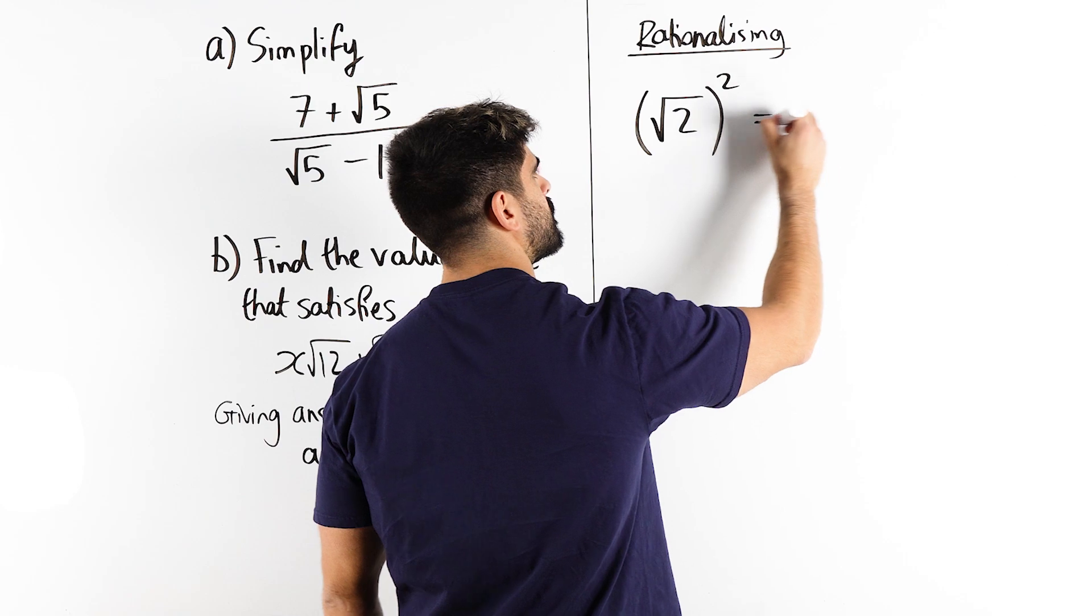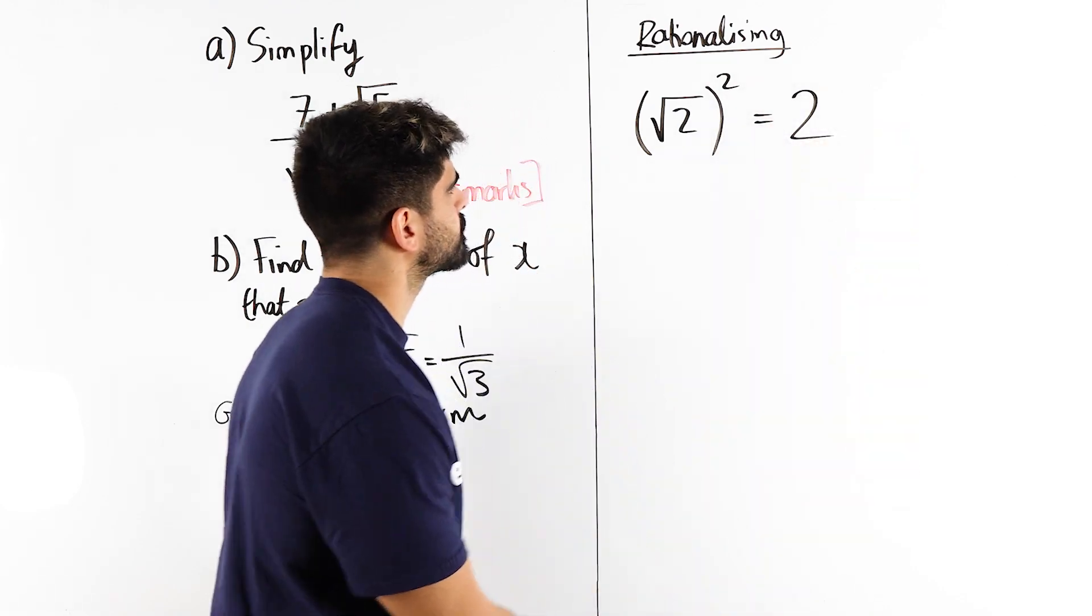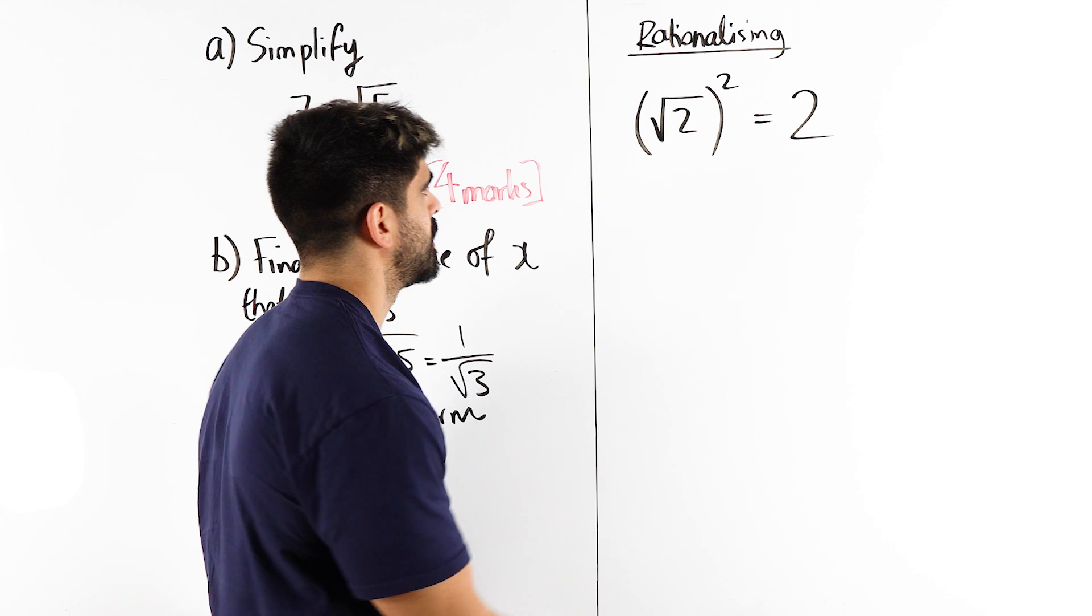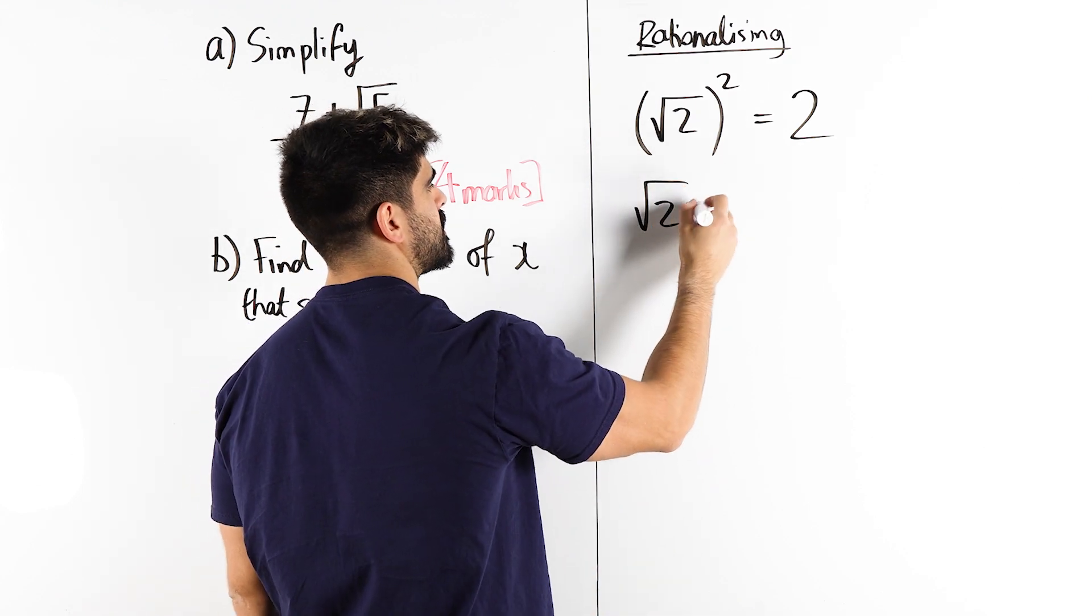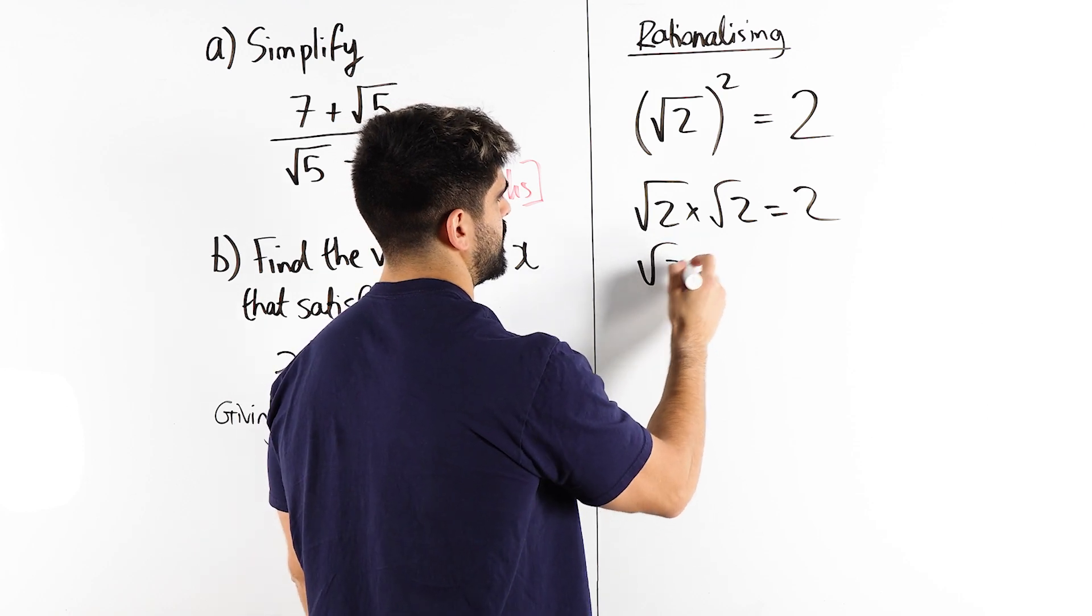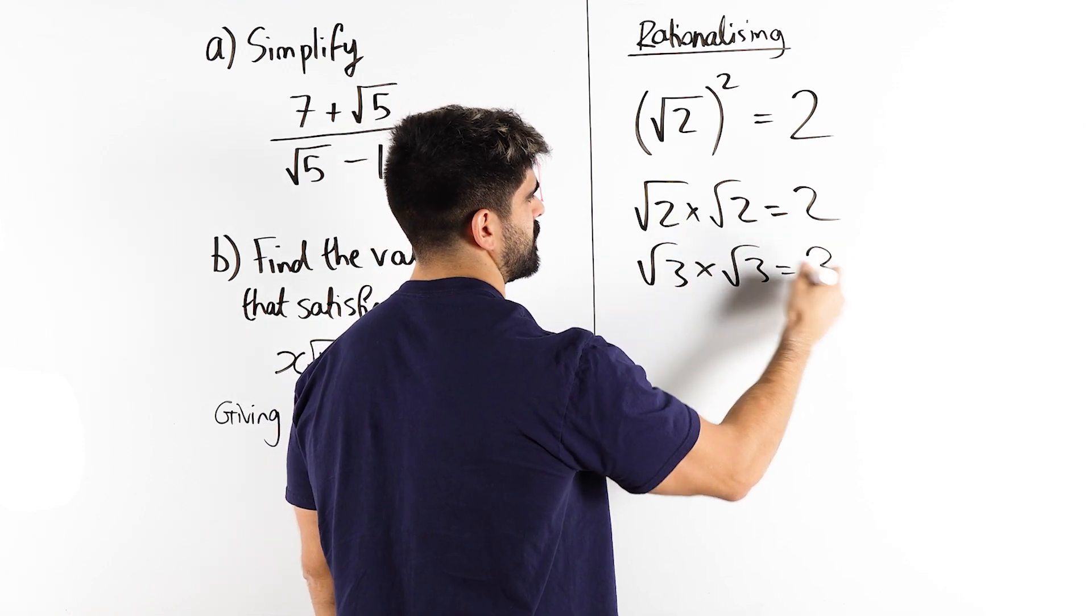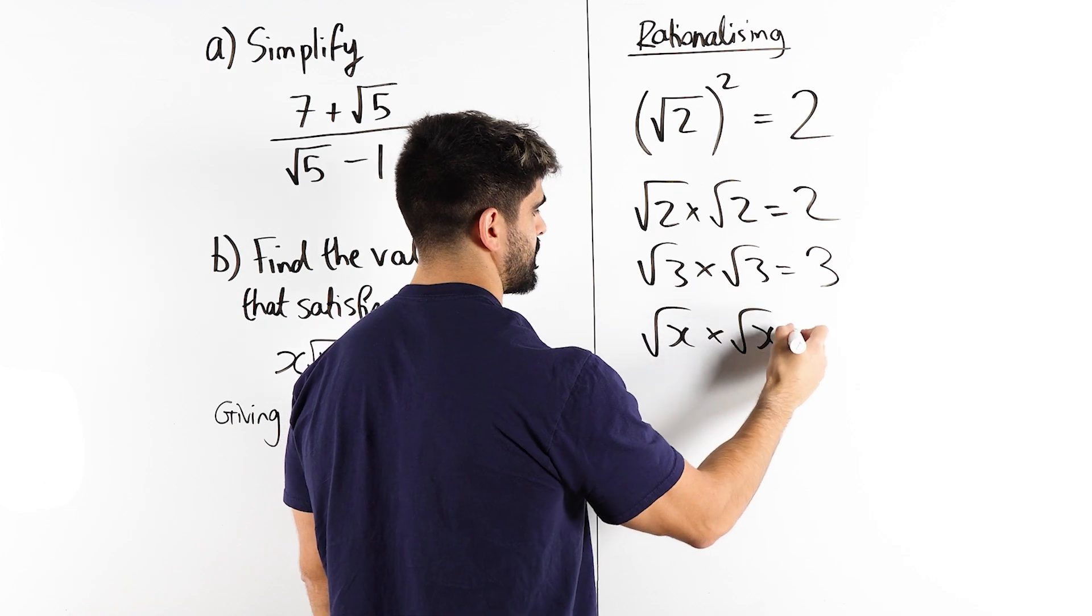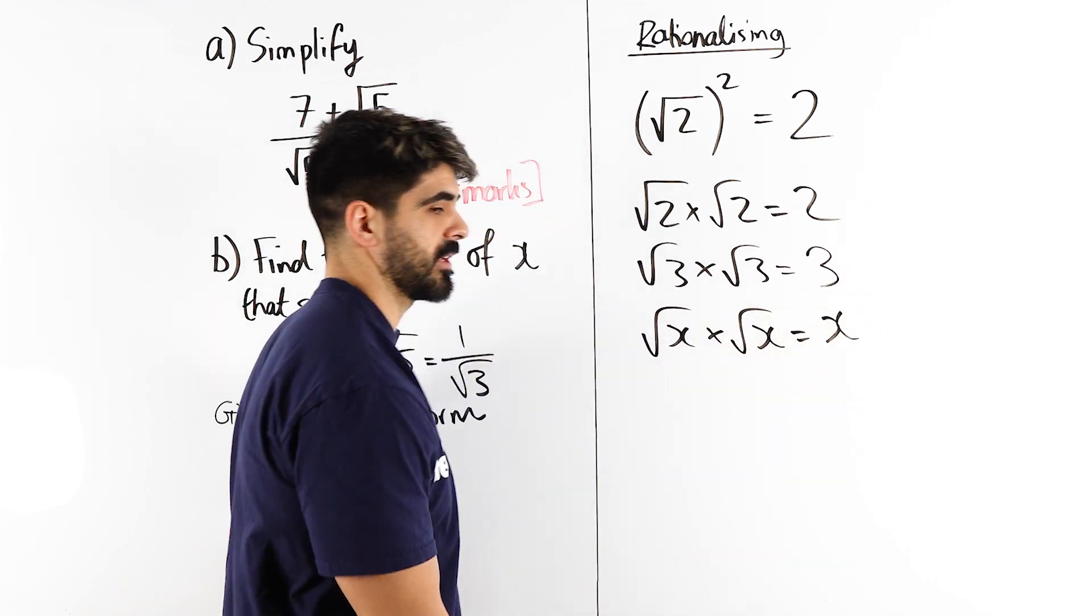Squaring just means multiply the number by itself. So root 2 times root 2 is 2. Nice. Root 3 times root 3 is 3. Root x times root x is x.